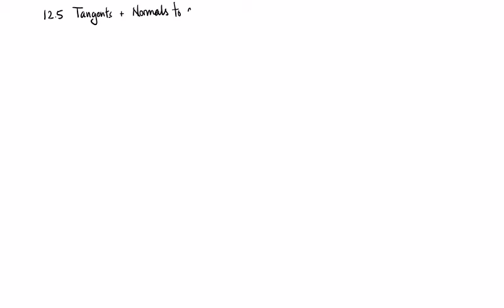This is section 12.5. The section is called Tangents and Normals to Curves, but a better subtitle might be the thing that the section finishes with, which is Tangential and Normal Components of Acceleration.